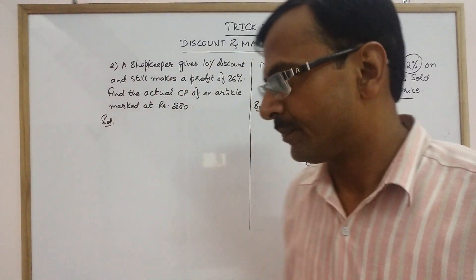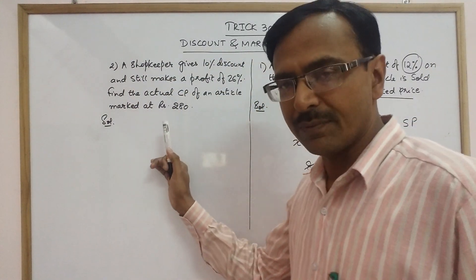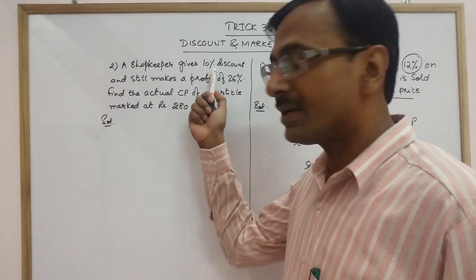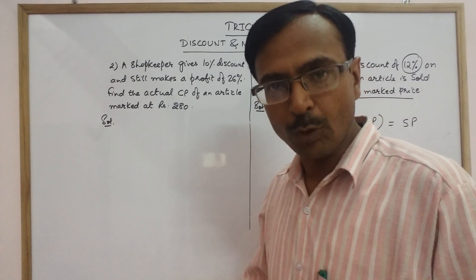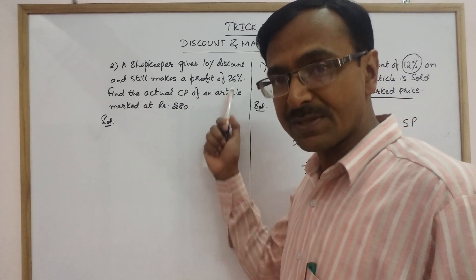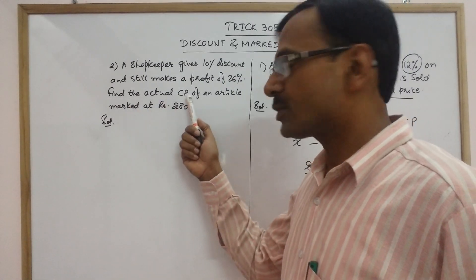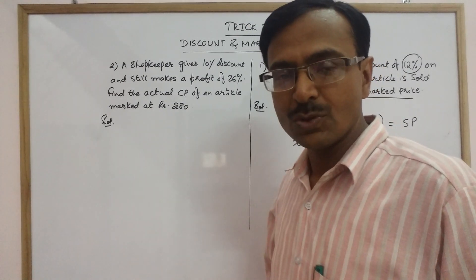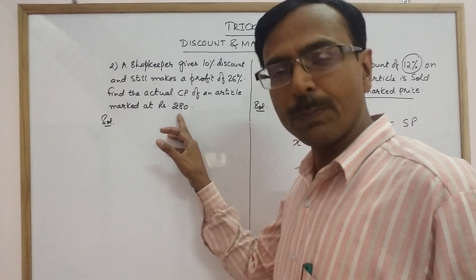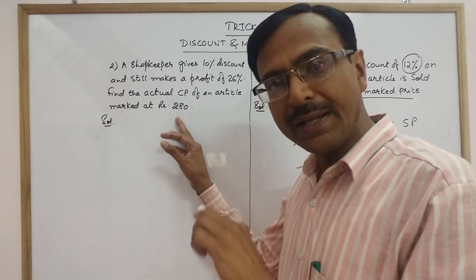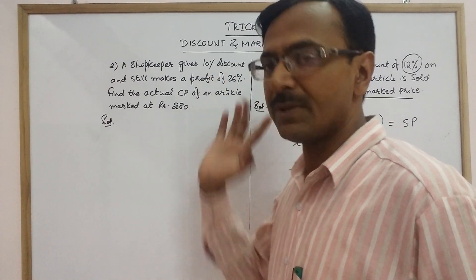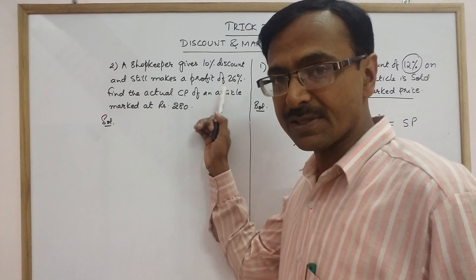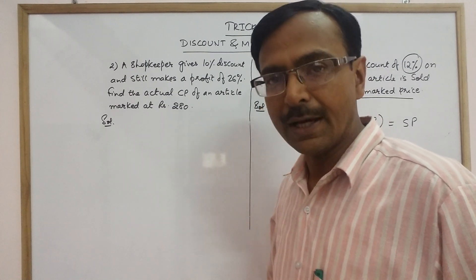Now come to the second question. Here, the shopkeeper is giving a discount of 10%, but even after giving that discount he is making a profit of 26%. We need to find the cost price of an article which is marked at rupees 280. The shopkeeper has marked the article at rupees 280, gives a 10% discount, yet still makes a profit of 26%. We need to find the cost price.